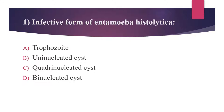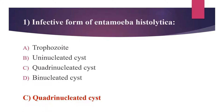The answer is Option C, quadrinucleated cyst. The trophozoite is the invasive stage of Entamoeba histolytica and is the only form seen in tissue. Initially the cyst is uninucleated; after binary fission it becomes binucleated and then quadrinucleated. The mature cyst, i.e. the quadrinucleated cyst, survives 3-4 months outside the host body after desiccation.